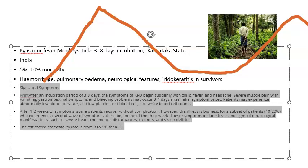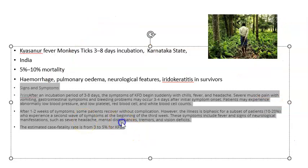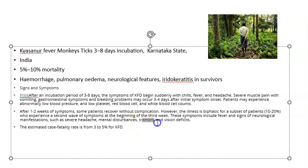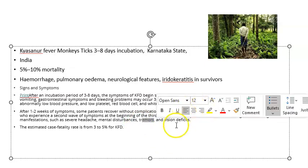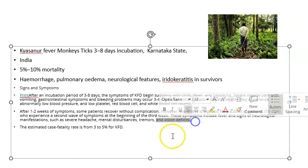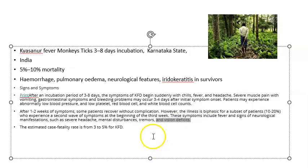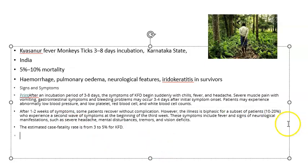Then in the third week, symptoms return — this is the biphasic phase. The second phase includes fever again and neurological manifestations: severe headache, mental disturbances, tremors, and vision defects like photophobia. Fatality rate is 5 to 10 percent — some patients can die from the disease.